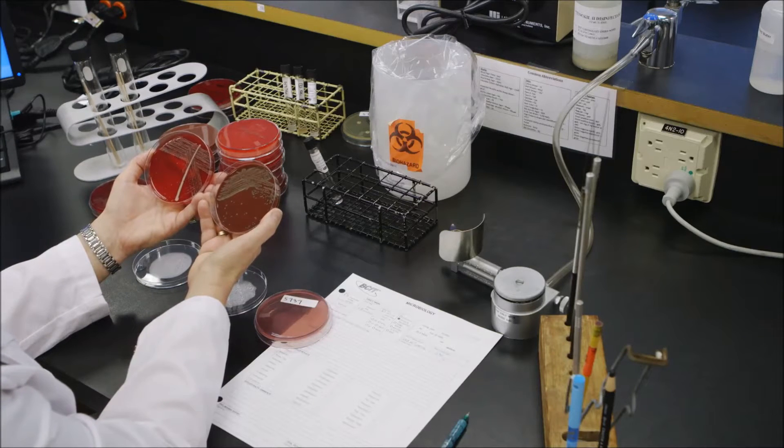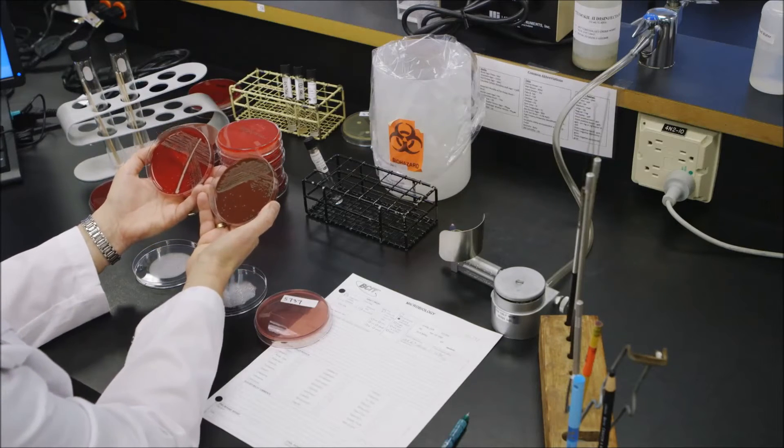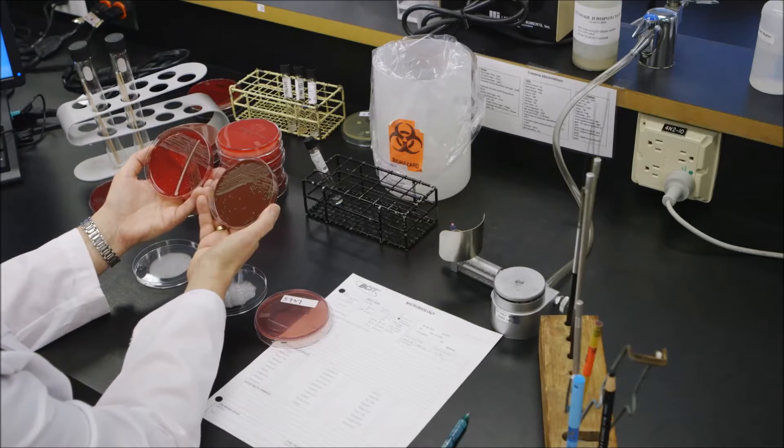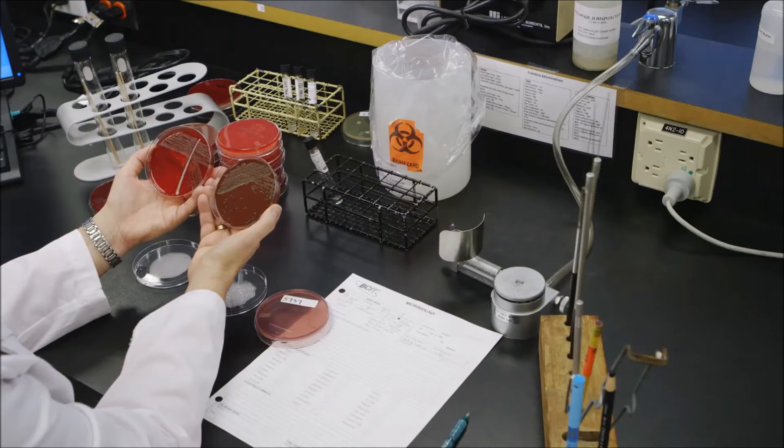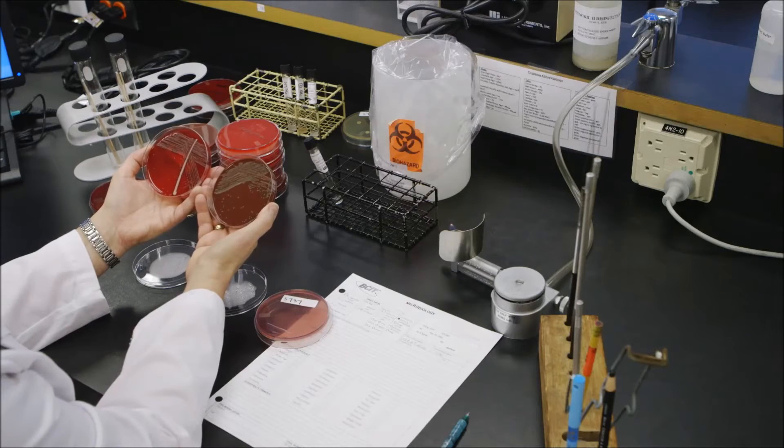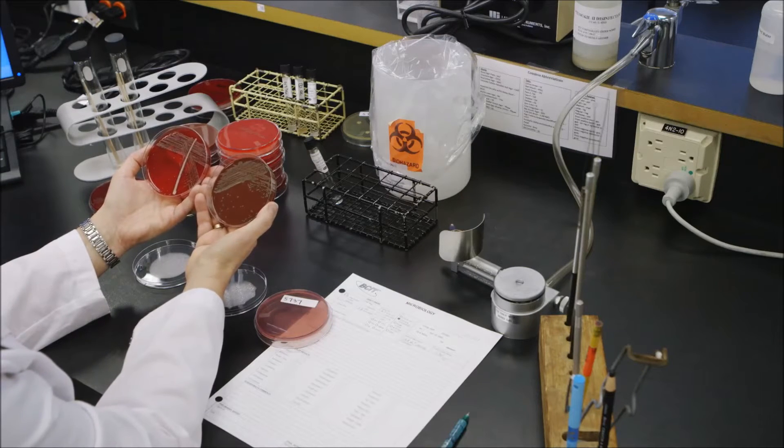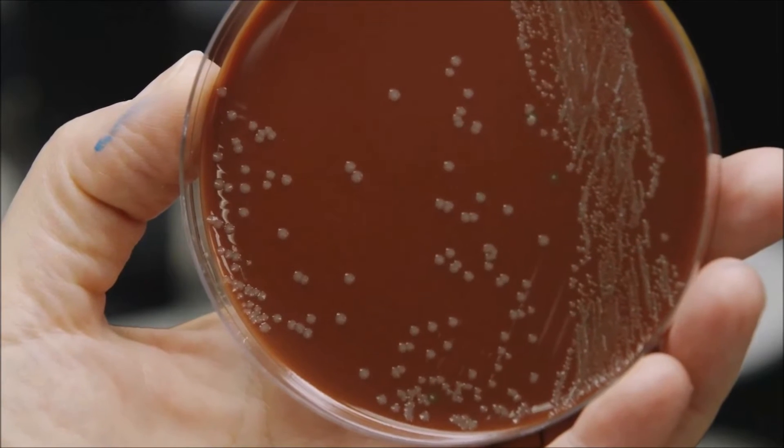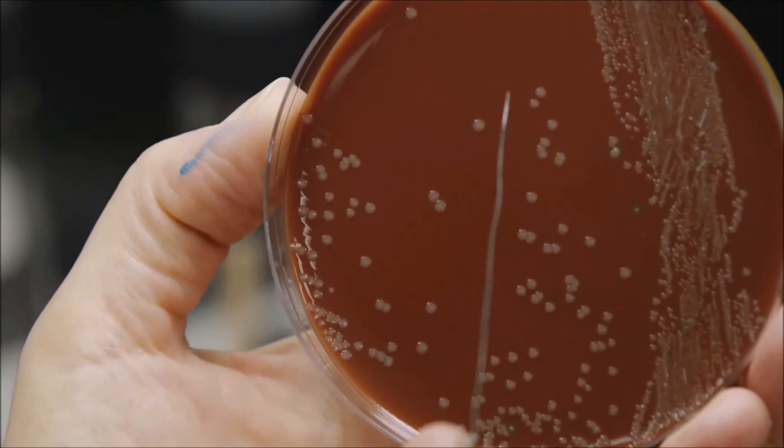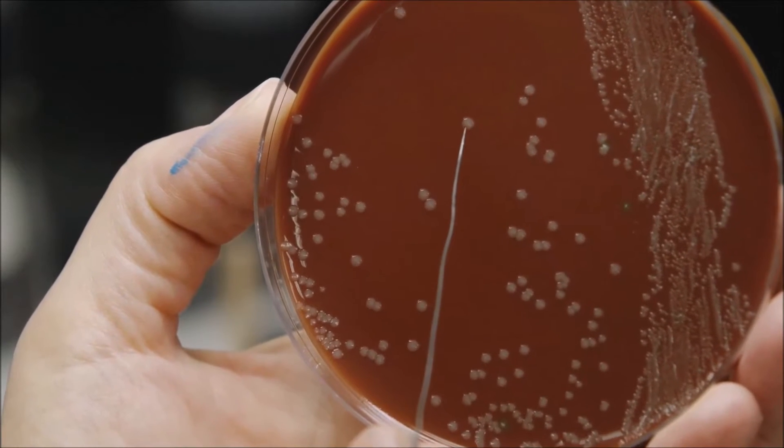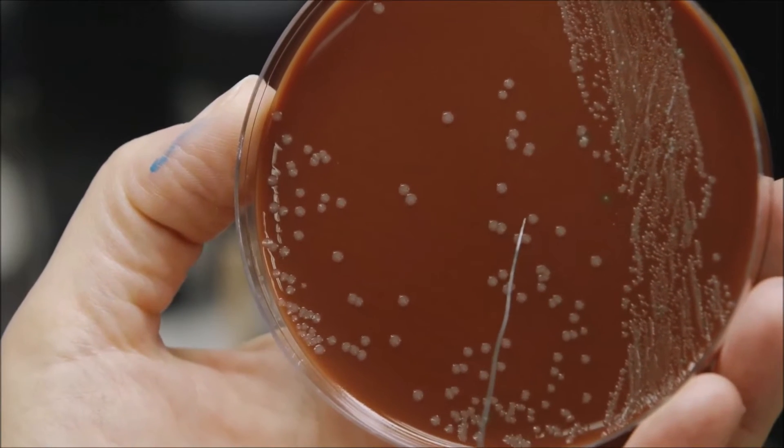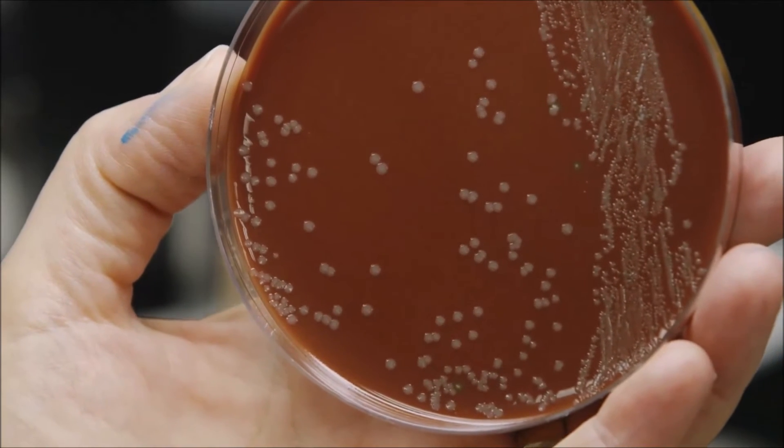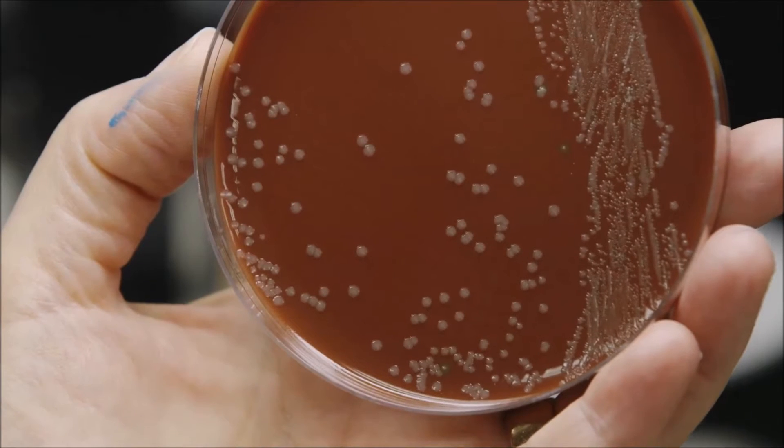So side by side you should be able to determine if there is a colony growing in abundance on the chocolate plate that you don't see in similar size on the blood plate. When I look at these two plates I see this colony right here. It's a medium-sized gray or tan colony that's growing in at least a plus three amount of growth.